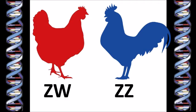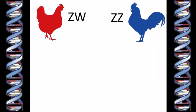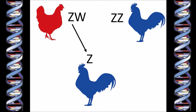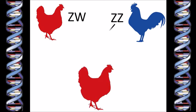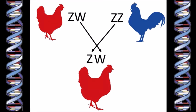A rooster has two Z chromosomes, so he will pass on one of them to his chicks. And the hen has one Z and one W. If she passes on her Z gene, the baby chick will be a boy. If she passes on her W gene, the baby chick will be a girl.